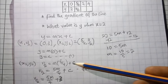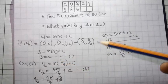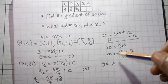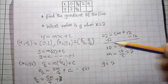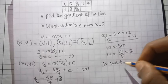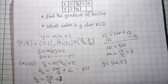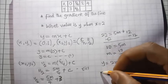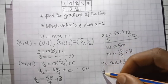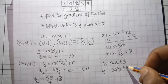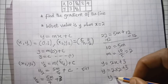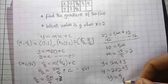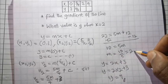We know c equals 3 and m equals 2, so in the main equation we have y equals 2x plus 3. We are asked to find the corresponding value of y when x is equal to 2. Substituting: y equals 2 multiplied by 2 plus 3, which is 4 plus 3, so y is equal to 7. The corresponding value of y is 7, and our gradient is equal to 2.